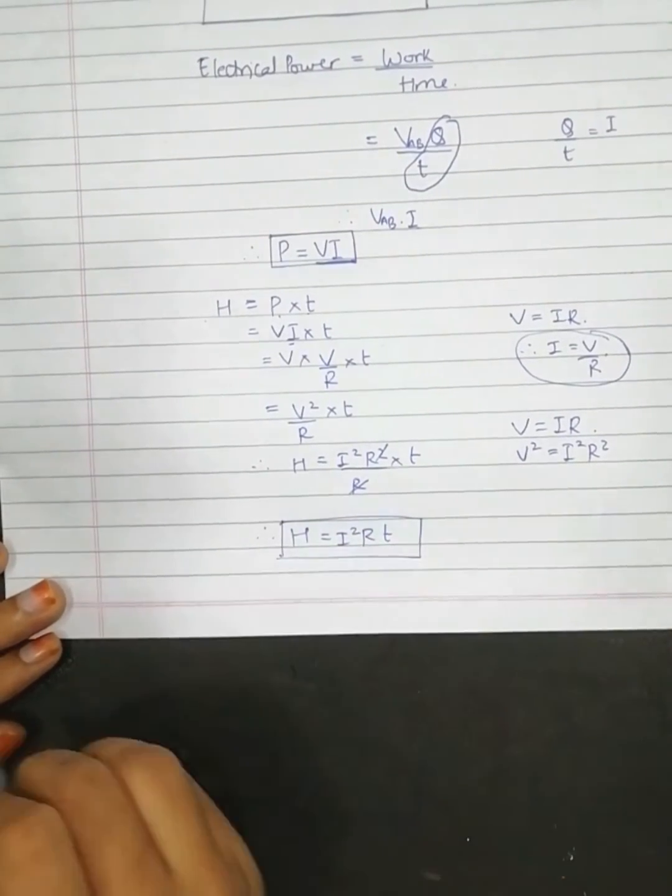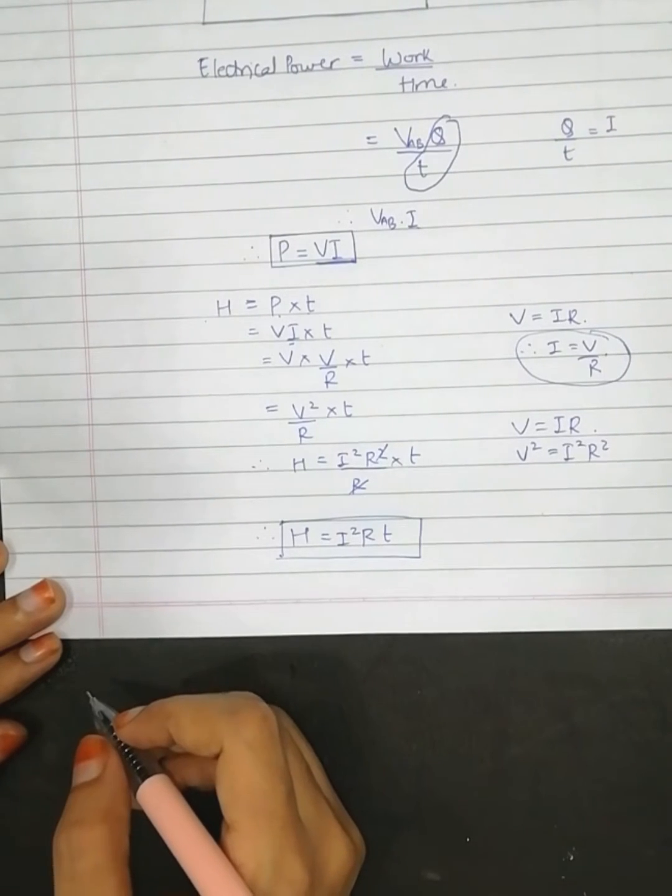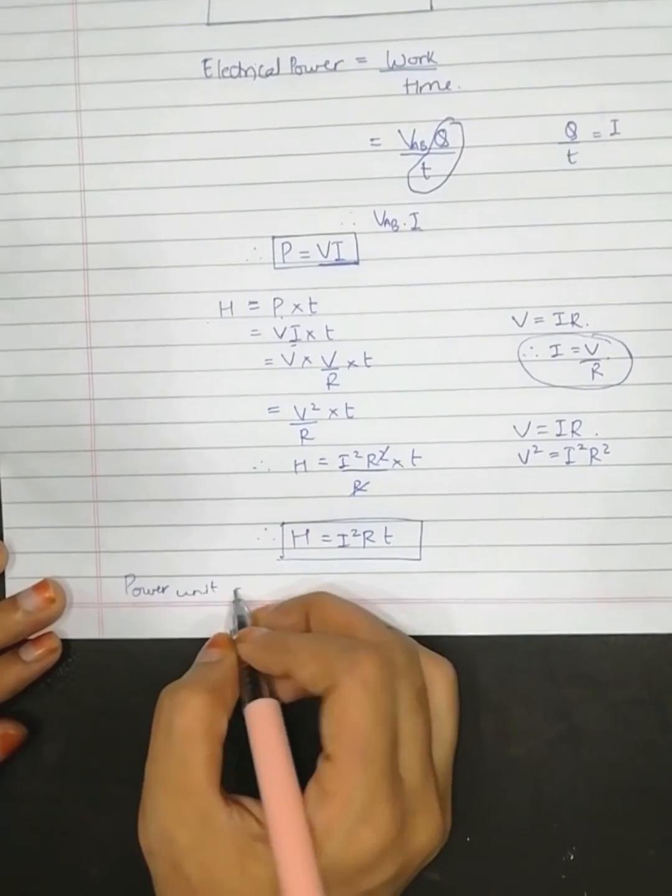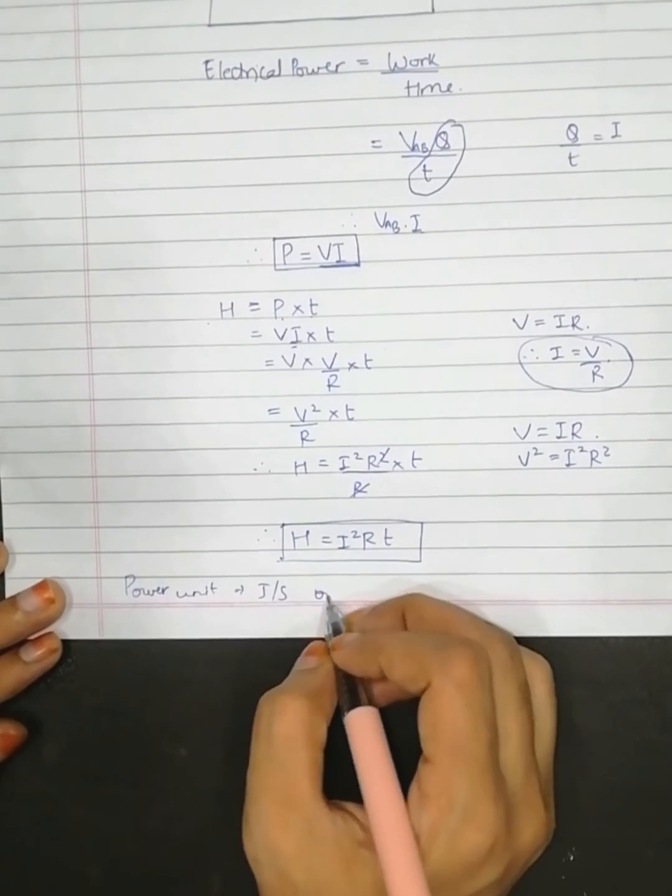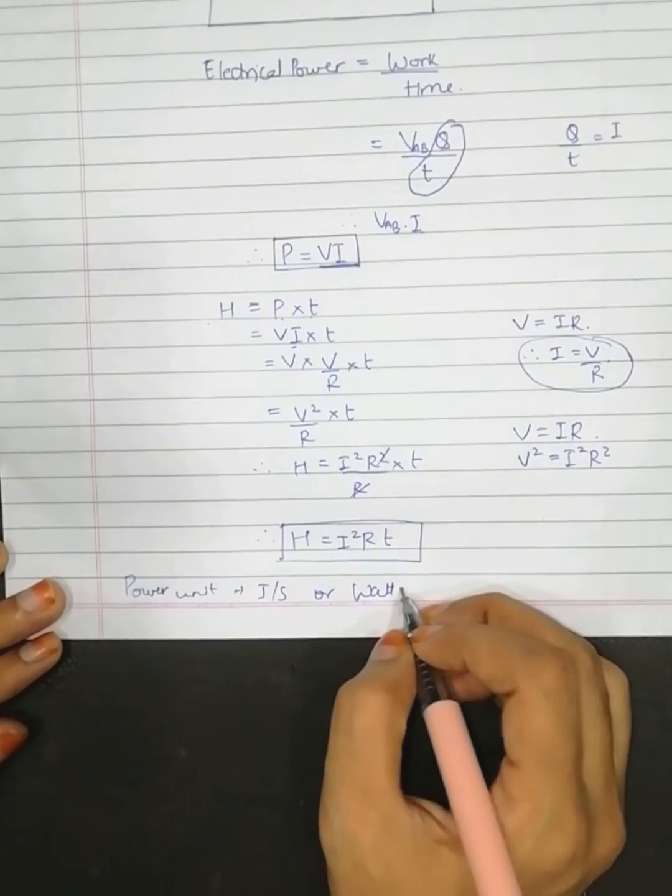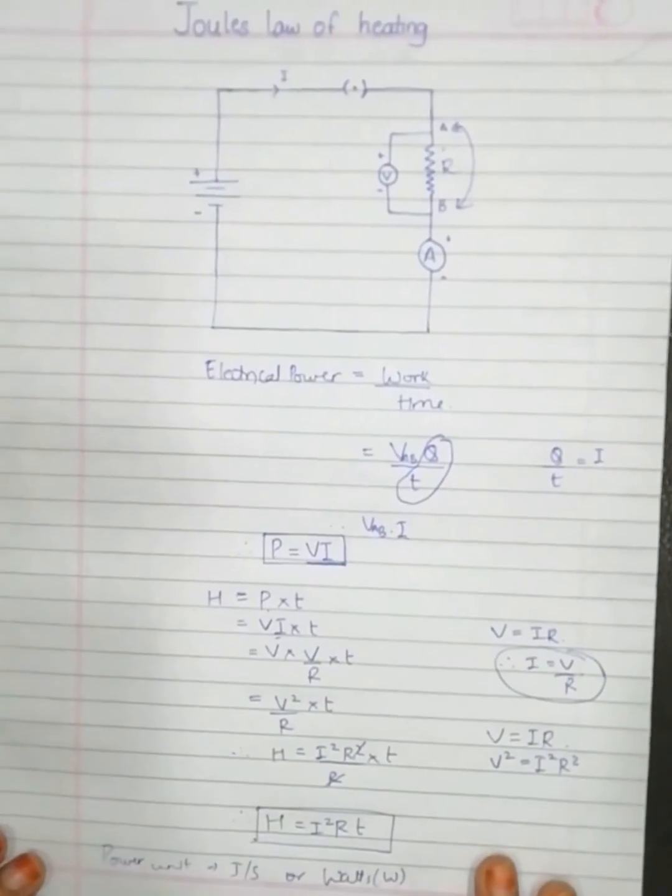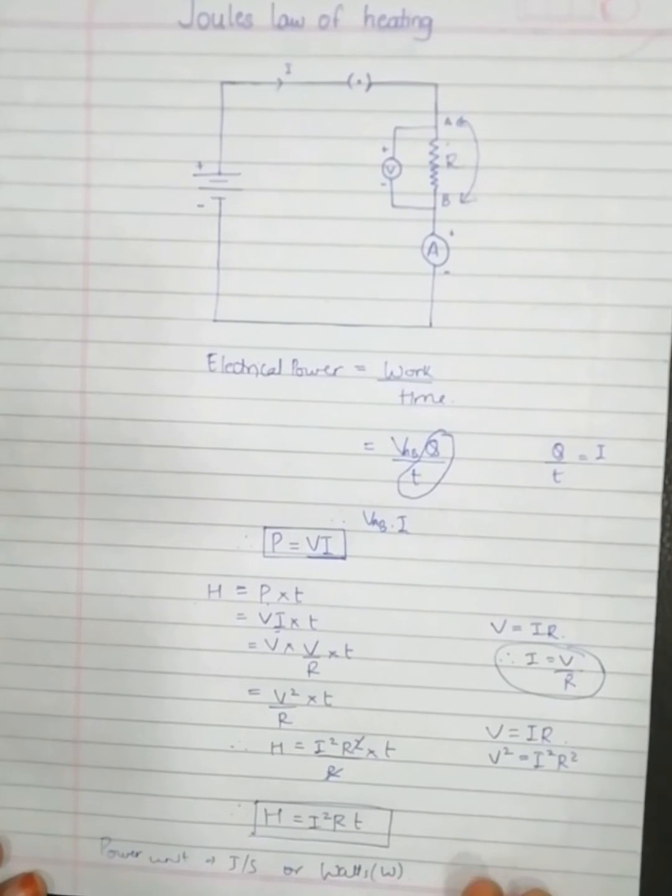Now in case they ask you the unit of power, then power has unit joules per second or simply watts. This was all about this video. I hope you understood. Thank you so much for watching till the end.